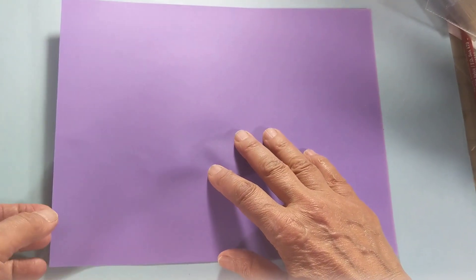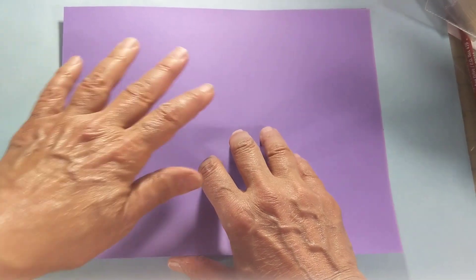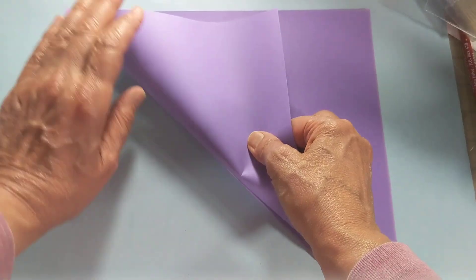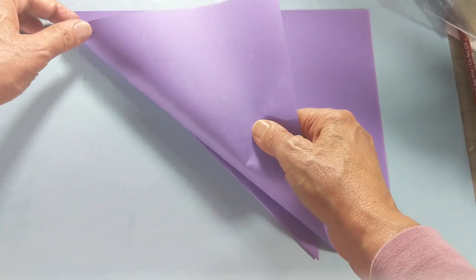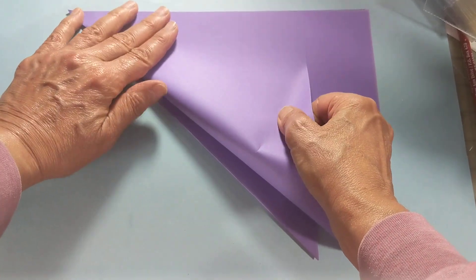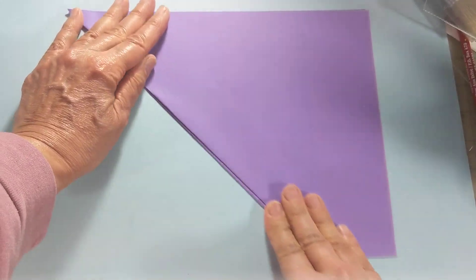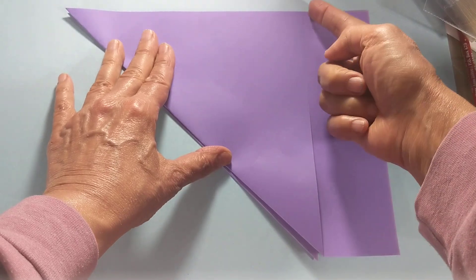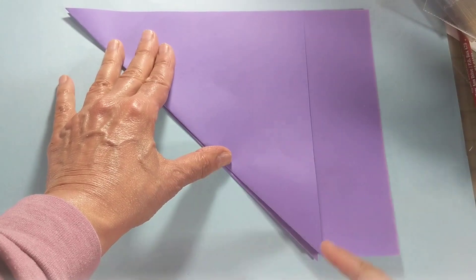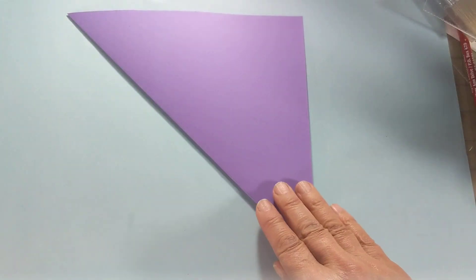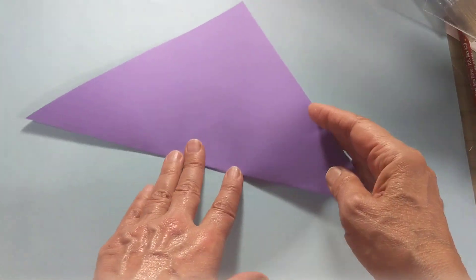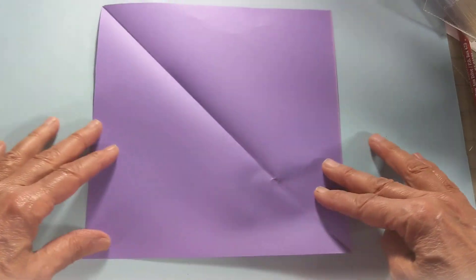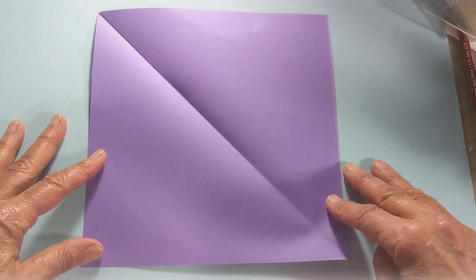First thing you want to do is make this into a square. I'm going to bring this short edge up here and line it up with the long edge, and then cut off this strip right here. It ends up being a square which does not really look like a square, looks like a triangle, but I did make a square.